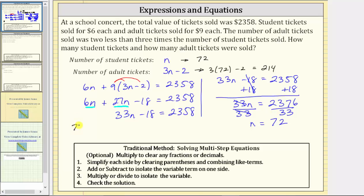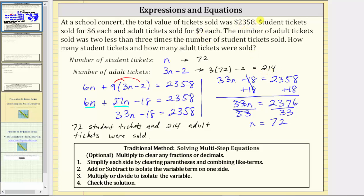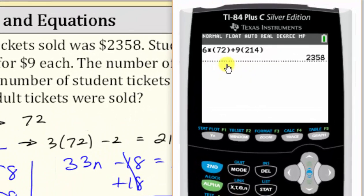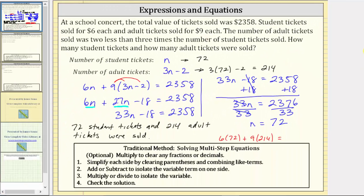Let's write out the answer. We now know that 72 student tickets and 214 adult tickets were sold. We can check the answer by verifying that $6 times 72 plus $9 times 214 equals $2,358. So our check is 6 times 72 plus 9 times 214 equals 2358, the total value of the tickets. Let's check this on the calculator. Notice how 6 times 72 plus 9 times 214 is 2358, verifying our answer is correct.